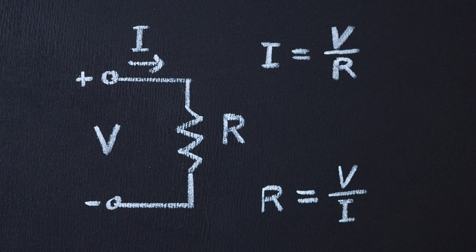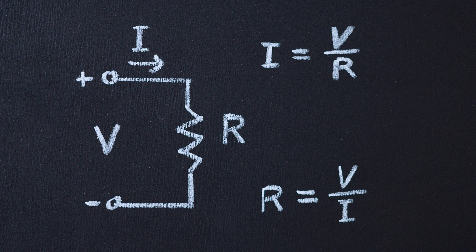Ohm's law is fundamental in understanding voltage drop. It states that the voltage, V, across a resistor is equal to the current, I, flowing through it multiplied by its resistance, R. V equals I times R.